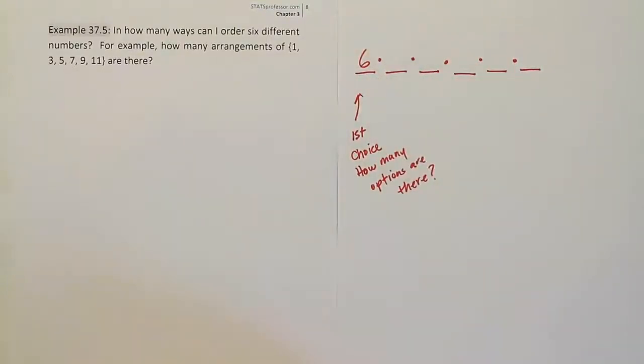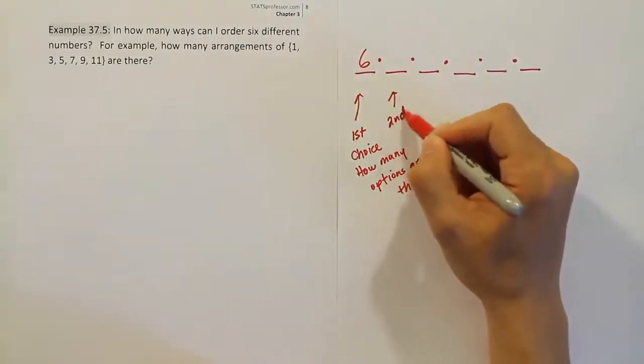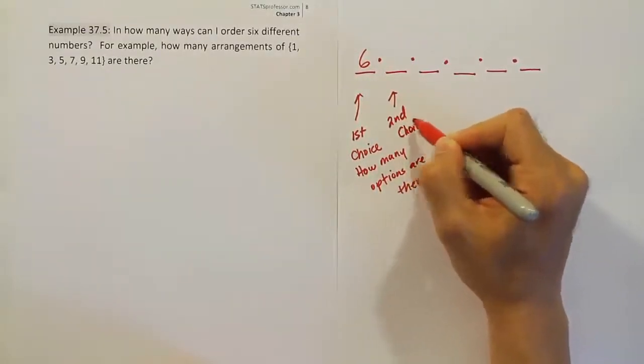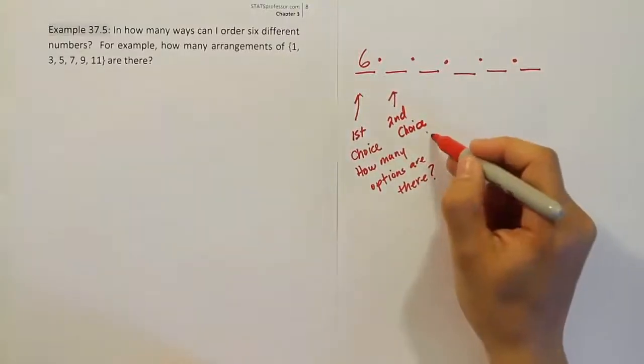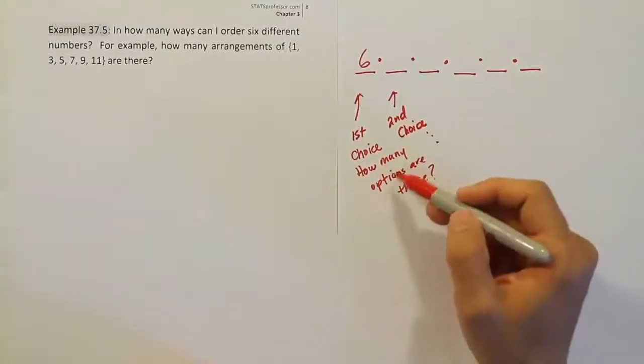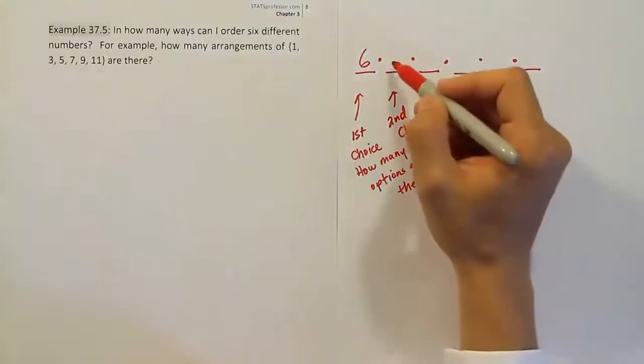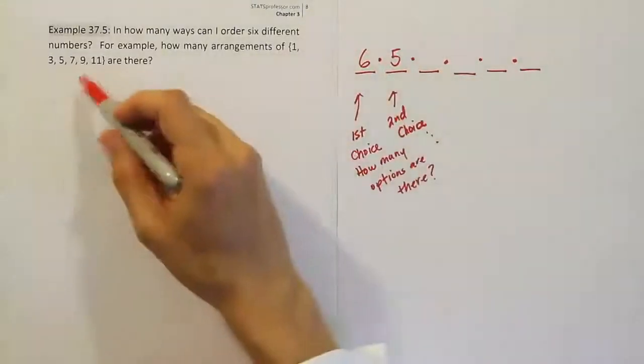But once you've chosen one of those numbers, then for the next choice, your second choice, you don't have as many options. For the second choice, asking the same question, how many options are there? Well, there's only going to be five at that point because you've chosen one of those numbers already for the first position.